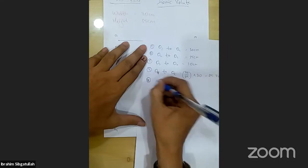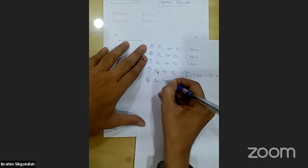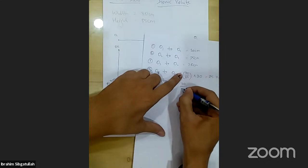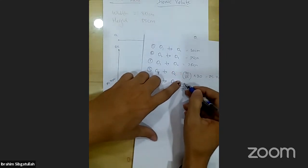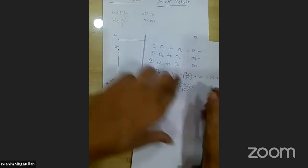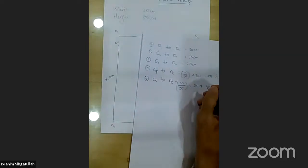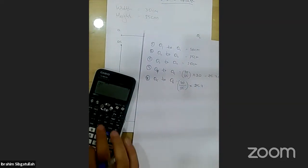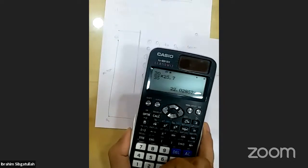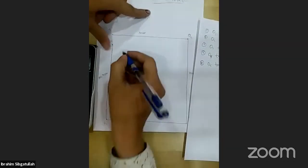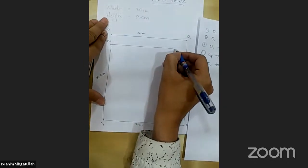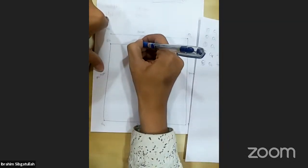O5 to O6: 30 divided by 35 into 25.7 equals 22 centimeters. Then O6 to O7: 30 divided by 35 into 22 centimeters equals 18.8 centimeters. You have to continue this same process all the way until you reach O11 — at least 11 points must be created.